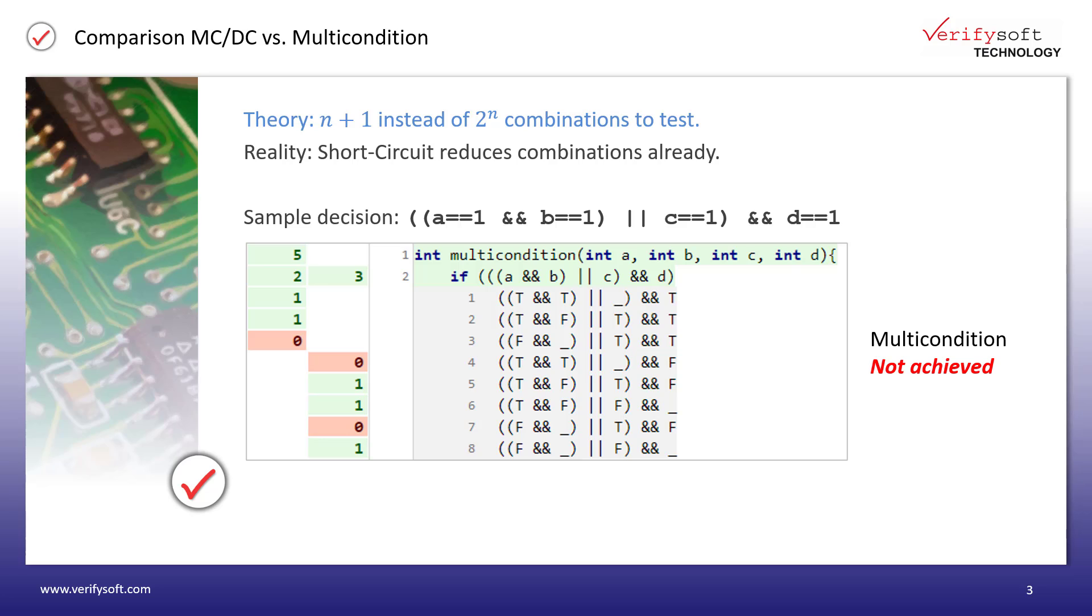In languages like C, short circuit evaluation reduces already the number of possible combinations. From 16 tests in theory down to 8 tests in this example.